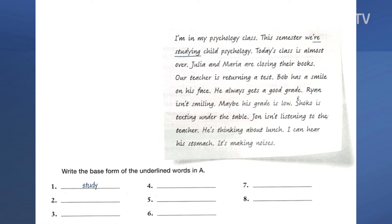Today's class is almost over. Julia and Maria are closing their books. 'Closing' is the present progressive and 'close' is the base form. Our teacher is returning a test. 'Returning' — the base form is 'return'. Bob has a smile on his face — he always gets a good grade. Ryan isn't smiling — 'smiling', the base form is 'smile'. Coco is texting under the table — 'texting', the base form is 'text'. John isn't listening to the teacher — 'listening', 'listen' is the base form. He's thinking about lunch — 'thinking', the base form is 'think'. I can hear his stomach. It's making noise — 'making', the base form is 'make'. Good.